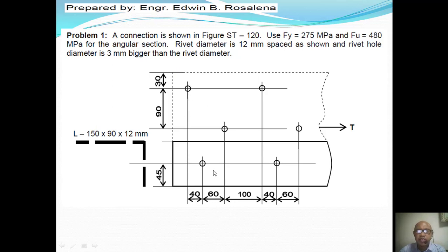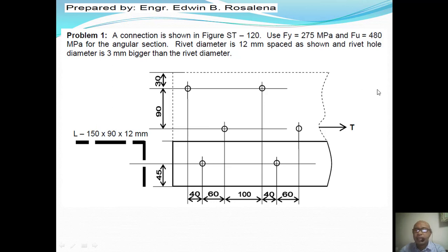Since the holes are in a staggered arrangement, we take one repeating arrangement. The pattern repeats as bolt A, bolt B, bolt C. We consider just one repeated set and label them hole A, hole B, and hole C. The next step is to find the critical chain — the chain arrangement that produces the smallest net area, which governs as the weakest or critical chain.